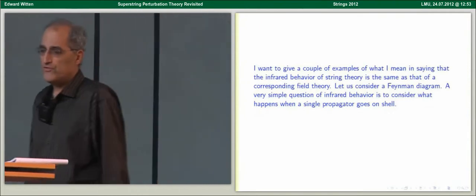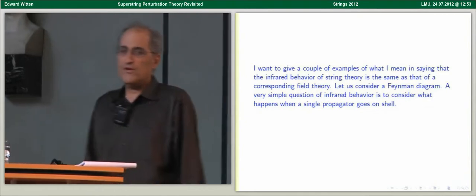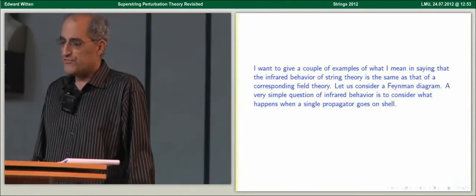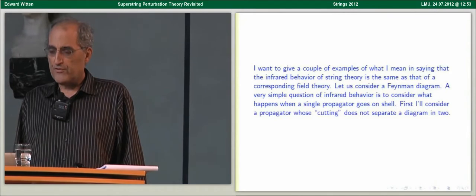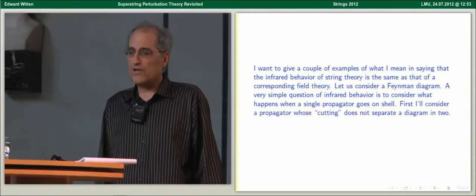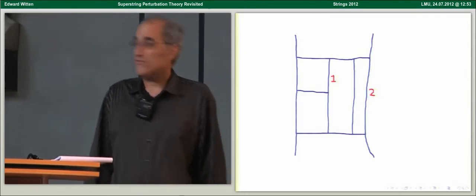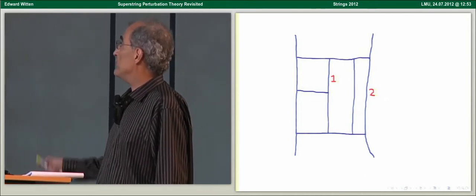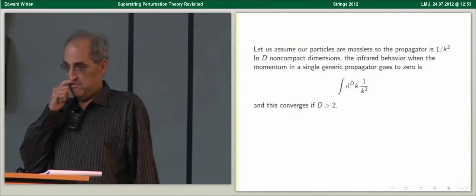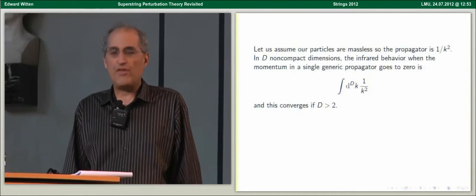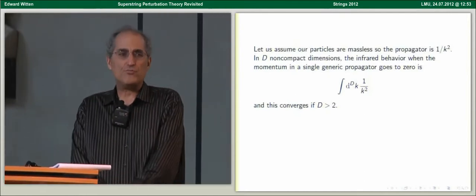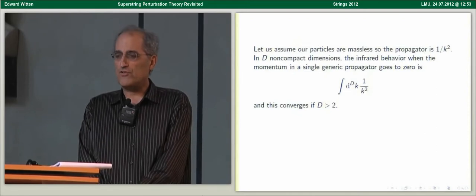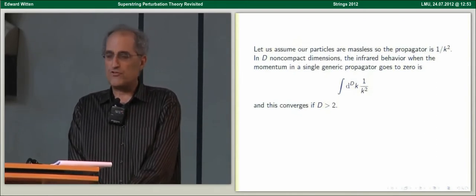I want to first give a couple of examples of what I mean in saying that the infrared behavior of string theory is the same as that of a corresponding field theory. Let's consider a Feynman diagram. One of the simplest questions of infrared behavior is to ask what happens when a single propagator goes on shell. We'll consider a propagator whose cutting does not separate a diagram in two. The most infrared singular case will be that of massless particles — the propagator of a massless particle is 1/k². In d non-compact dimensions, the infrared behavior when the momentum in a single propagator goes to zero converges if d is greater than 2.